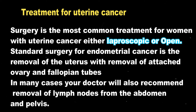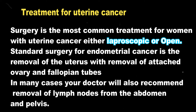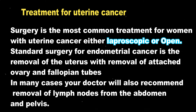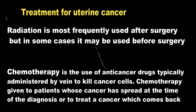Now we will know the main part of this video — the treatment of uterine cancer. Surgery is the most common treatment. It can be either laparoscopic or open. Standard surgery for endometrial cancer is the removal of the uterus along with the attached ovaries and fallopian tubes. In many cases, your doctor will also recommend removal of lymph nodes from the abdomen and pelvis, depending upon the stage. Next is radiation, which is most frequently used after surgery, but in some cases may be used before surgery to reduce the mass of cancer.